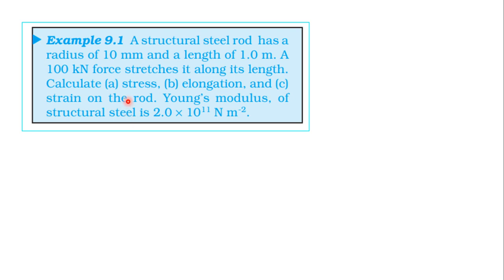From the NCRT Textbook, from the topic Mechanical Properties of Solids, here is example 9.1. A structural steel rod has a radius of 10 mm and a length of 1 m. A 100 kN force stretches it along its length. Calculate: first, stress; second, elongation; third, strain on the rod. The Young's modulus of structural steel is 2 × 10¹¹ N/m².